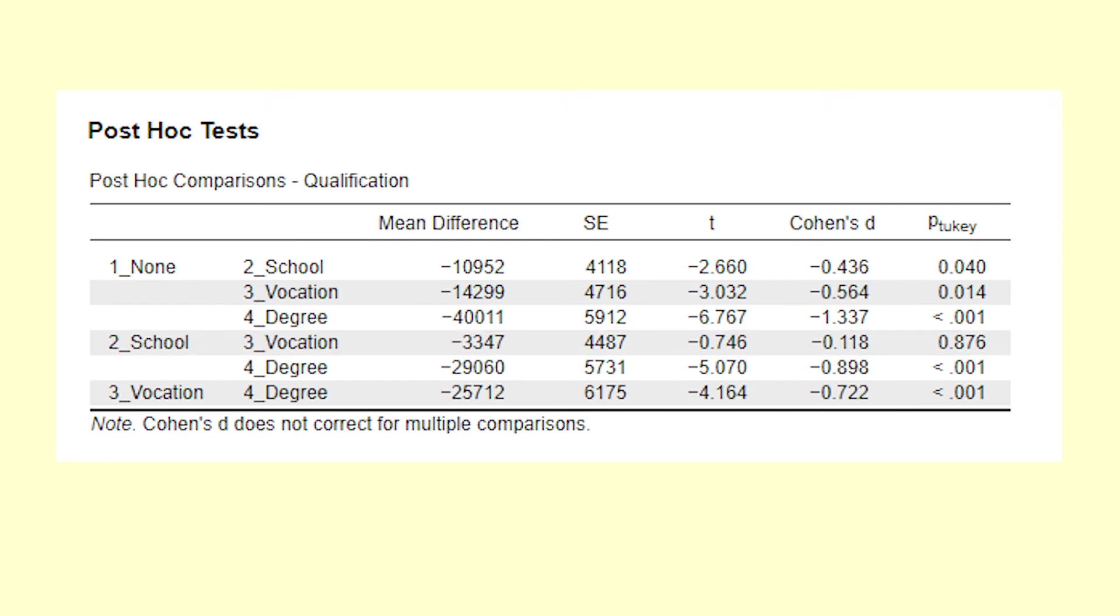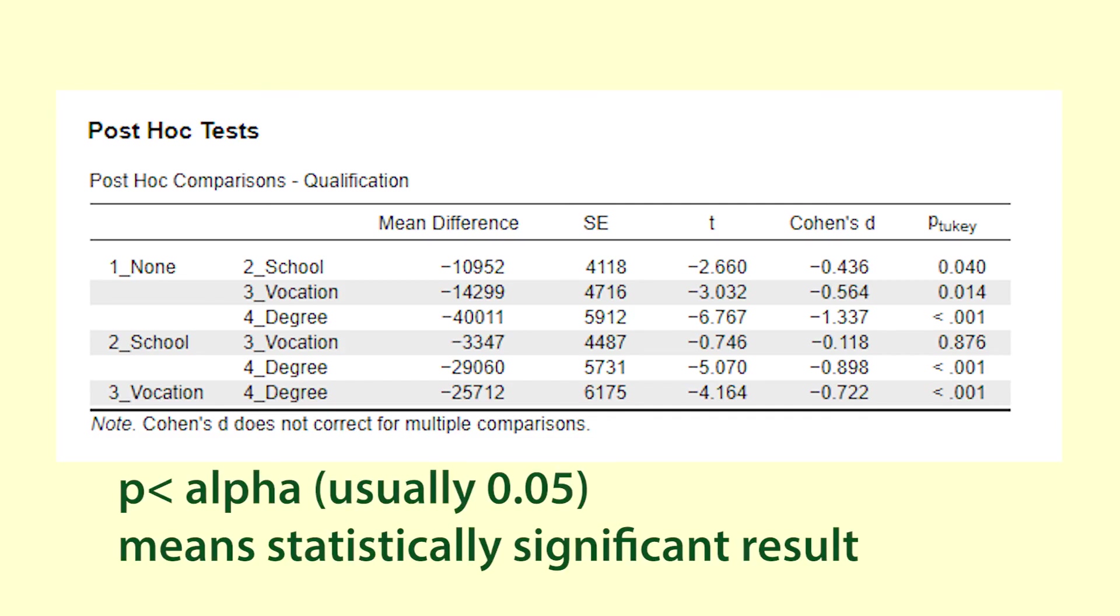When we get a p-value that is less than a specified level of significance we declare that the result is statistically significant.